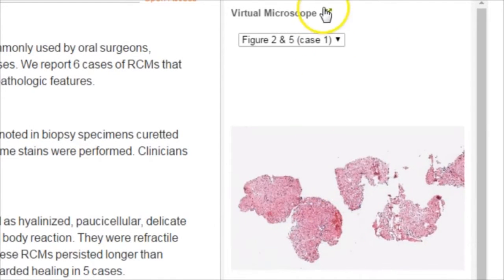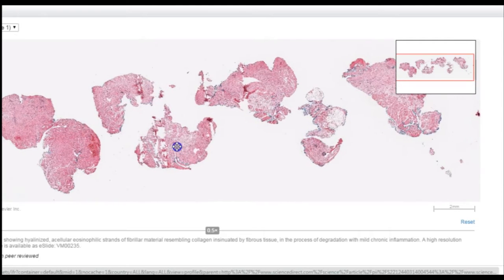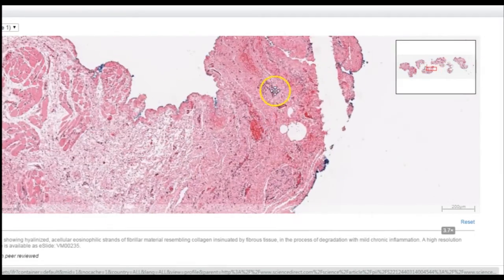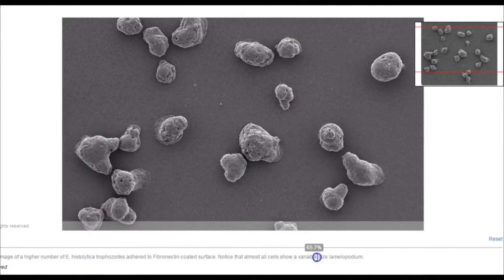When authors opt to use the virtual microscope, they do so by complementing the conventional microscopic images that appear in their manuscript with large pixel-size equivalents for detailed, high-quality viewing, all without the need for custom software or tools.